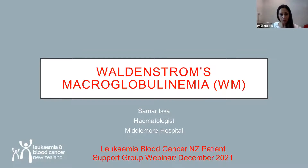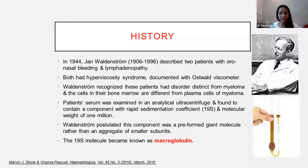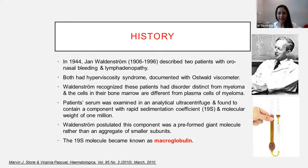So, Waldenström's macroglobulinemia — that's a mouthful, isn't it? Let us start by talking about the history, and where did that name come from? In 1944, Dr. Jan Waldenström, a Swedish doctor, described two patients with mouth and nose bleeding, and they also had enlarged lymph nodes. They both had hyperviscosity syndrome, and you will hear about hyperviscosity throughout my talk.